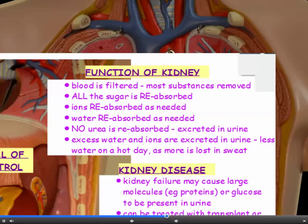Ions are reabsorbed as needed — not all of them, just the amount that we need. Water is also reabsorbed as needed, just the amount we need. Urea is not reabsorbed at all; it's a waste product, so all of it is excreted in our urine. Any excess water and excess ions are also excreted in the urine. We excrete less water on a hot day because we've lost more water in sweat as part of our cooling-down mechanism.